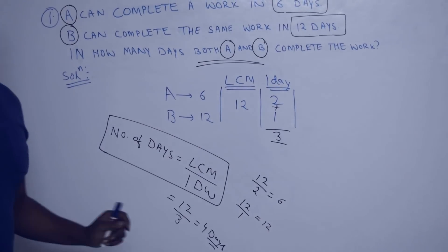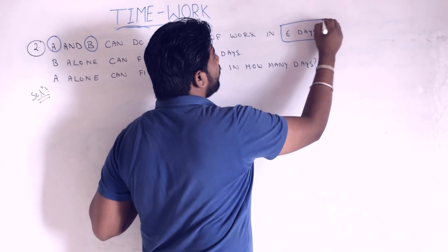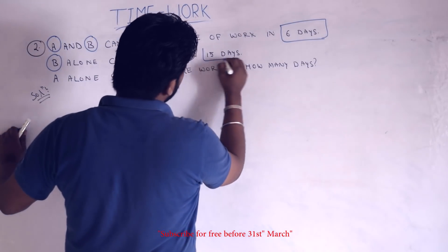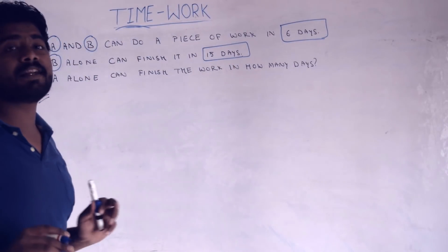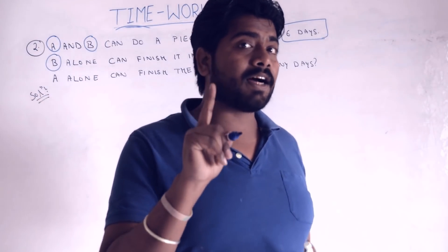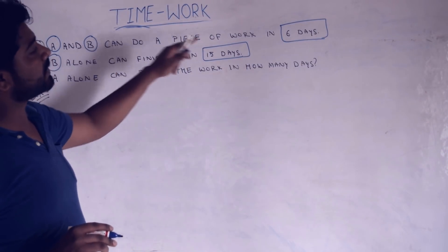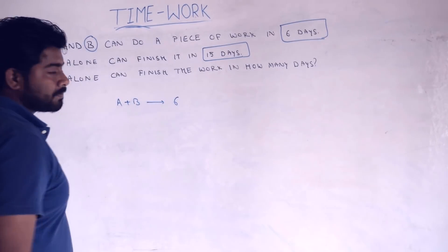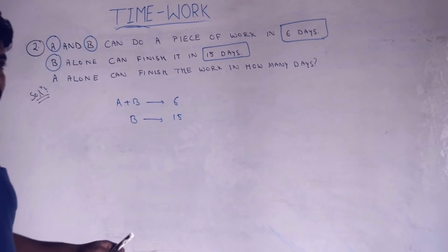In this question, A and B together can complete the work in 6 days. B alone can complete the work in 15 days. The question asks: in how many days can A alone finish the work? First, we write the information given: A+B together complete the work in 6 days, and B alone completes the work in 15 days.